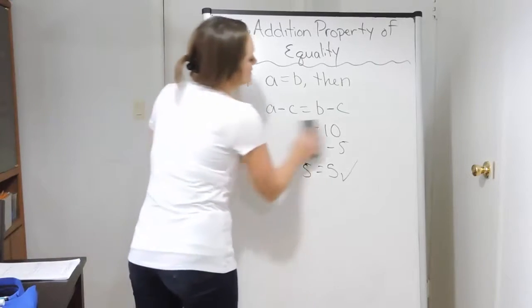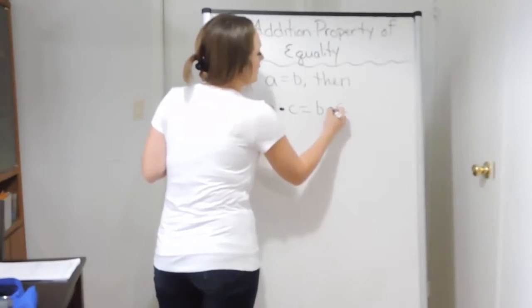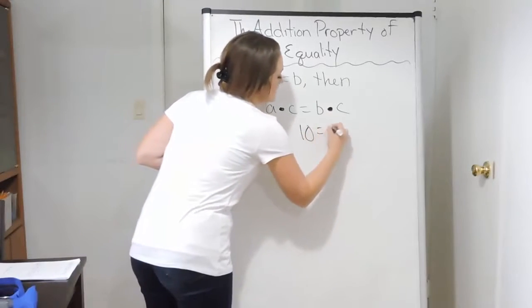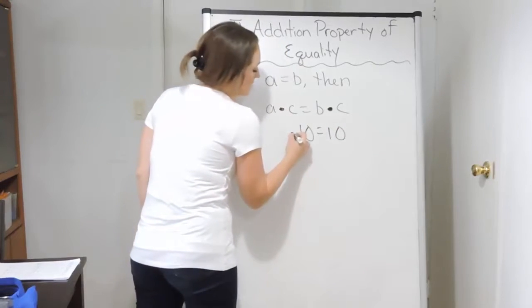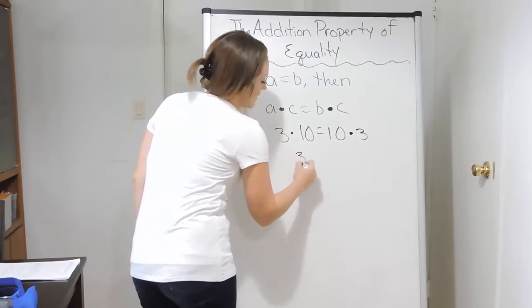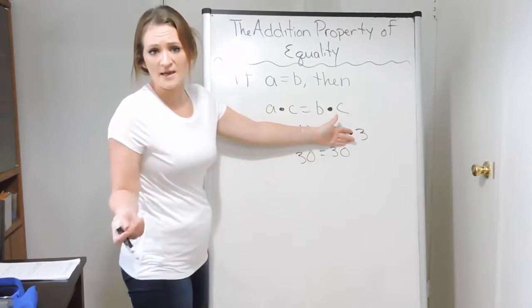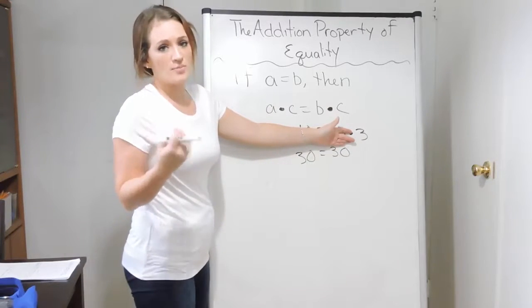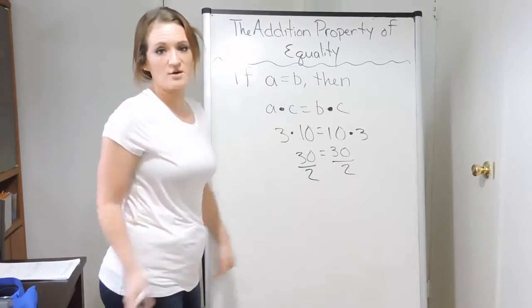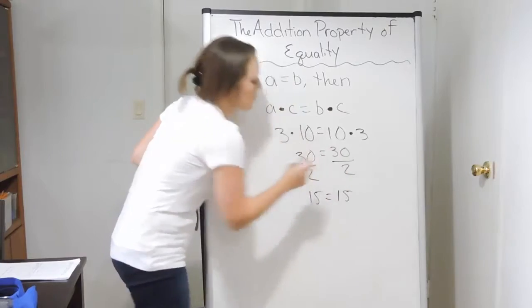The same thing works for multiplication and division as well. I can multiply the same thing on both sides — if A equals B, then A times C is the same thing as B times C. So if 10 equals 10, I can do times 3 over here, and as long as I'm doing times 3 over here as well, it's the same thing, because 30 equals 30. And if I decided to divide — as long as I'm dividing by the same thing on both sides, we're good. So I can divide by 2, and as long as I'm dividing by 2 on both sides, I'm still going to get a true equation. 30 divided by 2 is 15 on both sides.